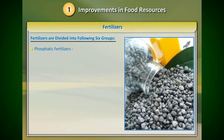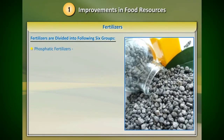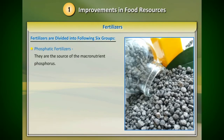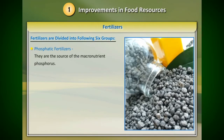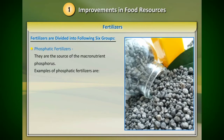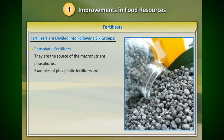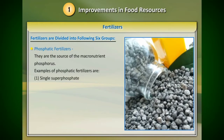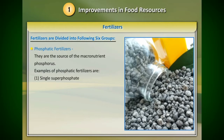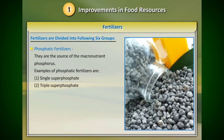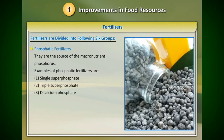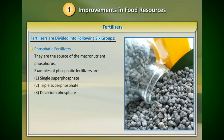Two: phosphatic fertilizers. They are the source of the macronutrient phosphorus. Examples of phosphatic fertilizers are: 1) single superphosphate, 2) triple superphosphate, and 3) dicalcium phosphate.